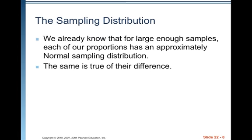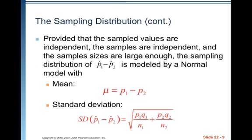We already know that for large enough samples, each of our proportions has an approximately normal sampling distribution. The same is true for their difference.